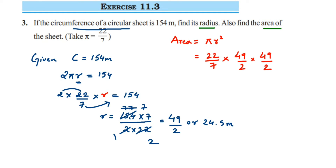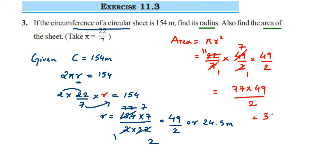Now doing the cancellation: 7 and 49 cancel — 7 × 7 = 49, leaving 7 in the numerator. Then 2 and 22 cancel — 2 × 11 = 22, leaving 11 in the numerator. So the numerator becomes 11 × 7 × 49 = 77 × 49 = 3773, and the denominator is 2. So Area = 3773/2.